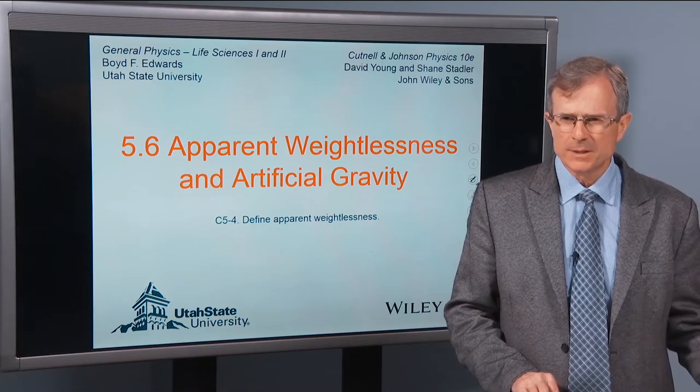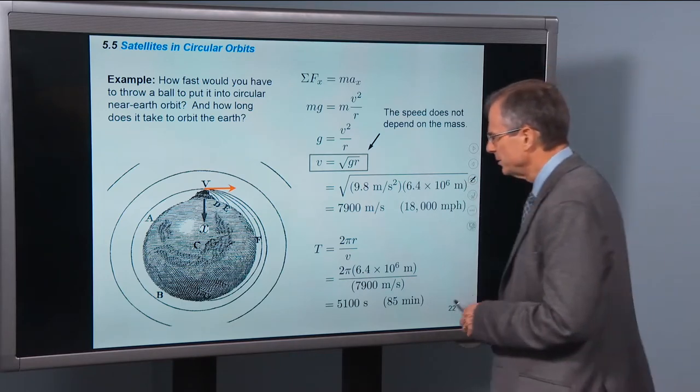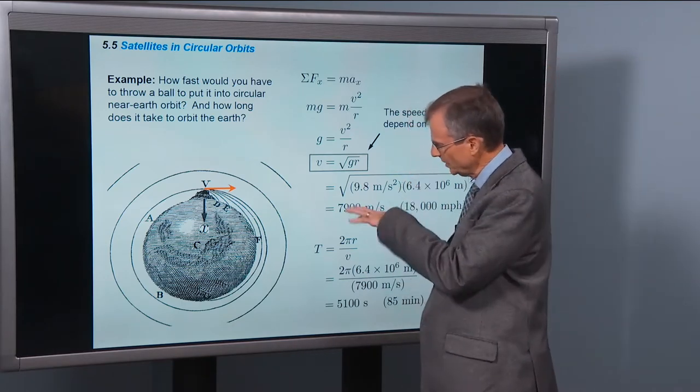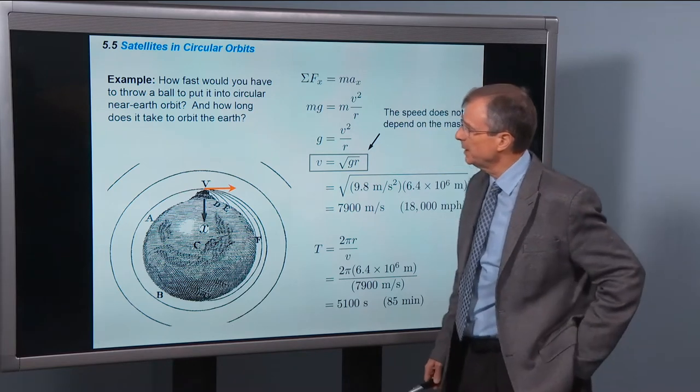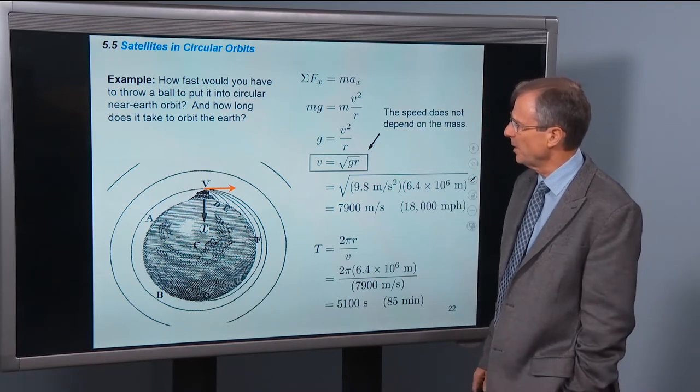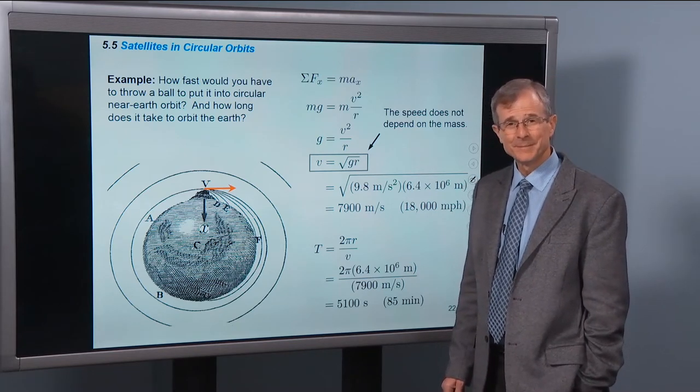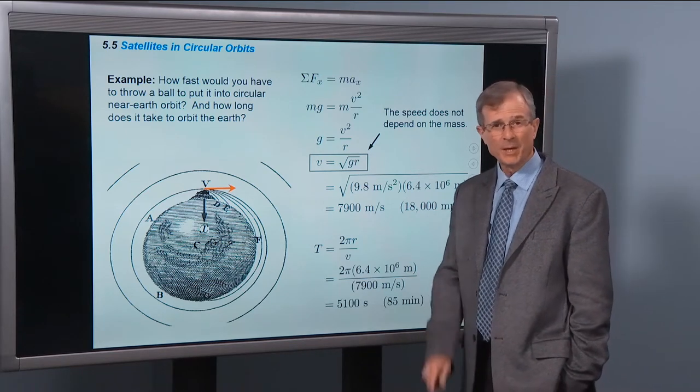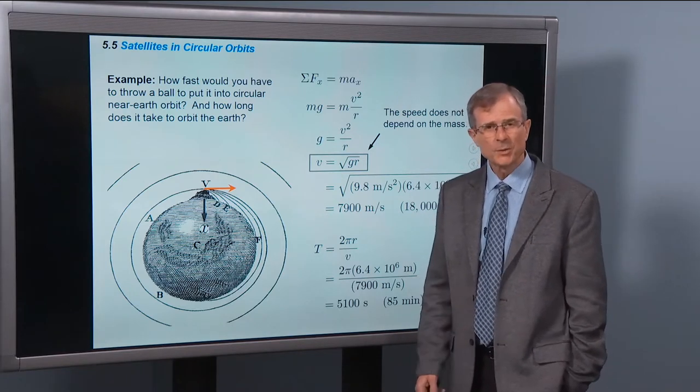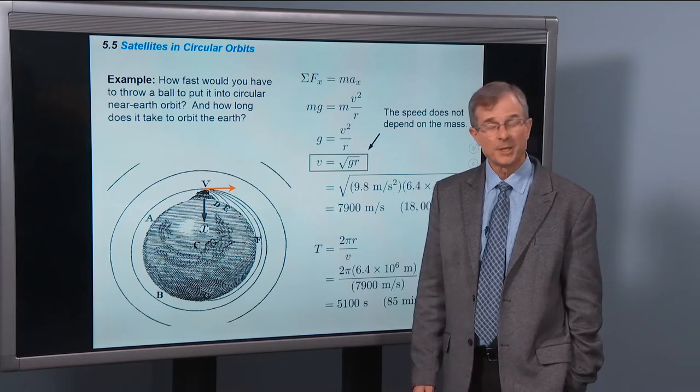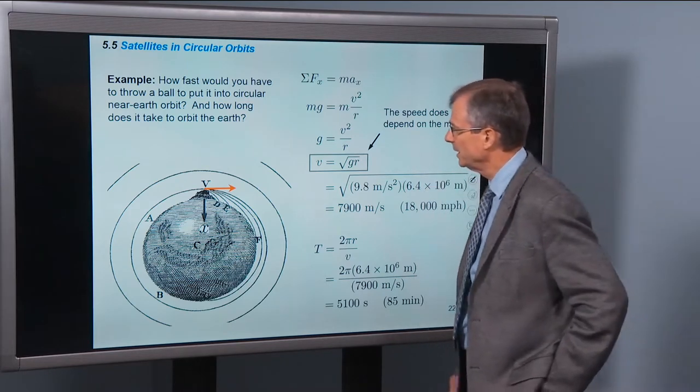Define apparent weightlessness is the only concept in here. First a few examples. Harking back to the slide we showed of Newton's Principia, how fast would you have to throw a ball to put it into circular near-Earth orbit? Great question. And some of you 90 mile an hour or 100 mile an hour fastballers out there, I'm going to ask the question if you can put that ball into orbit. And if so, how hard you'd have to train in order to get it up into orbit.